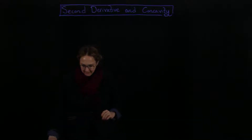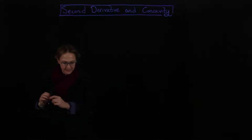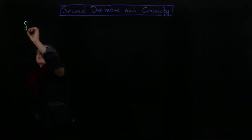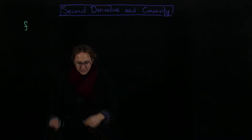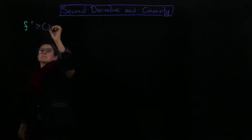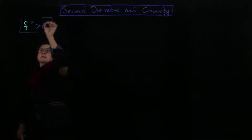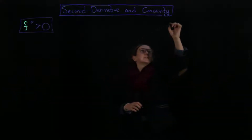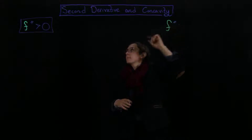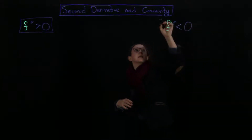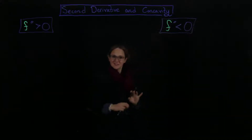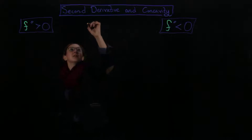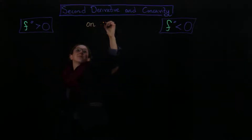So suppose I have the second derivative of a function f. The first circumstance is where the second derivative is greater than zero, and the second circumstance is where the second derivative is less than zero. We're looking at an interval on which each of these is true — both are happening on some kind of interval (a, b).